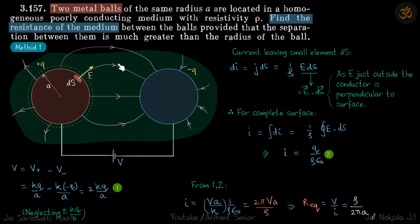We are given two balls which are located inside a medium whose resistivity is rho. We need to find the resistance of this medium between the two conductors.